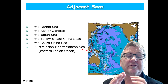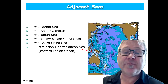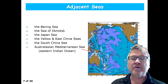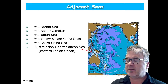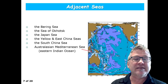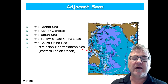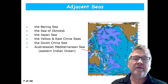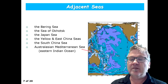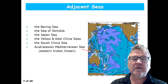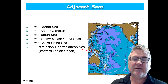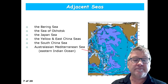You can see them here in this map, and we start in the northern part — at the very top, the Bering Sea, which is connected to the Arctic Ocean through the Bering. And then we go through the Sea of Okhotsk, the Sea of Japan, the Yellow and East China Seas, and the South China Sea.